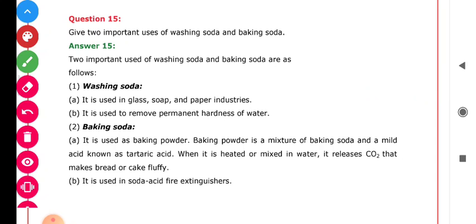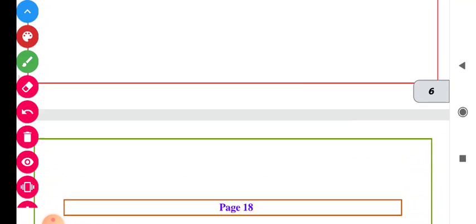Question number 15: Give two important uses of washing soda and baking soda. Washing soda is used in water treatment to remove permanent hardness and used in glass, soap, and paper industries. Baking soda - baking powder is used for baking bread, and also used in soda acid fire extinguishers.